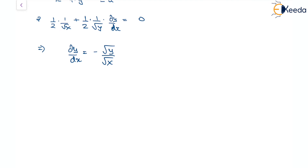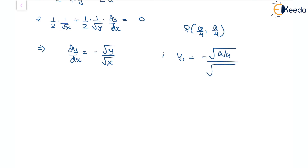To find the first derivative at the point (a/4, a/4), we substitute: y1 = −√(a/4) / √(a/4) = −1. So the first derivative at that point is −1.